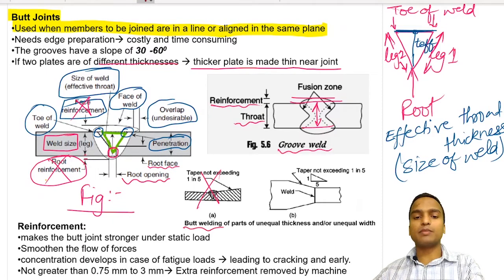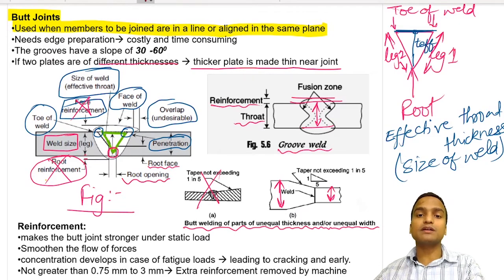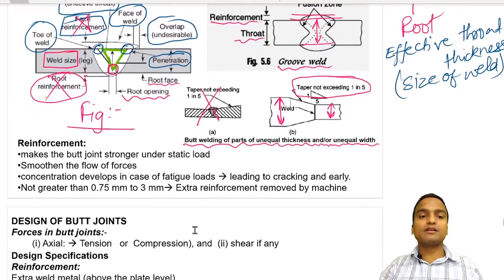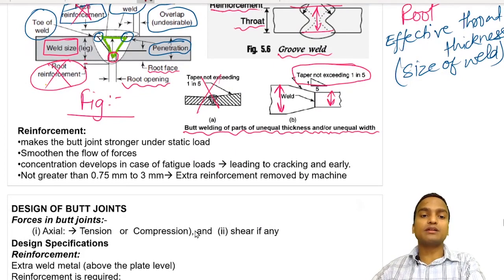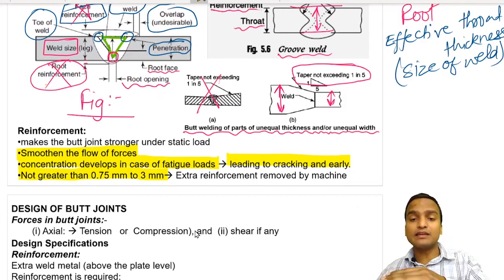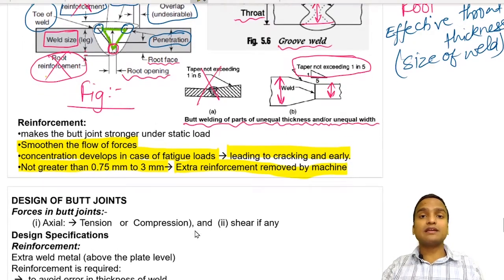The groove weld figure shows butt welding of parts of unequal thickness: the thicker member is made thin near the joint with a slope of 1 in 5. Reinforcement weld is important because it makes the butt joint stronger under static load and smoothens the flow of forces. However, stress concentration develops under fatigue loads, leading to cracking. Extra reinforcement above the base metal level can be removed by machine.